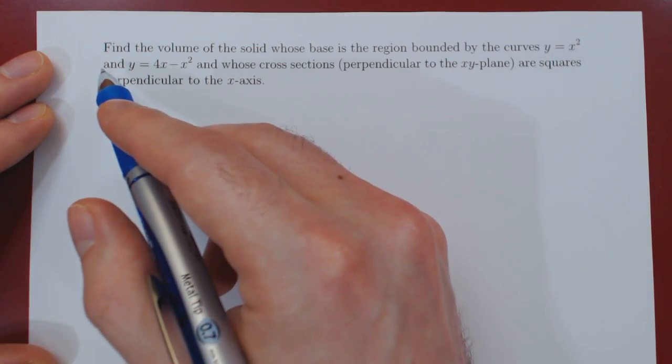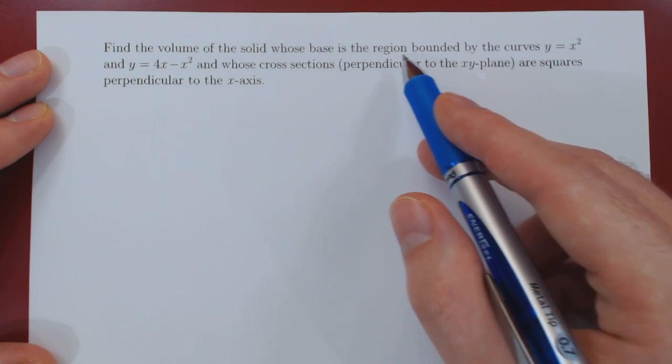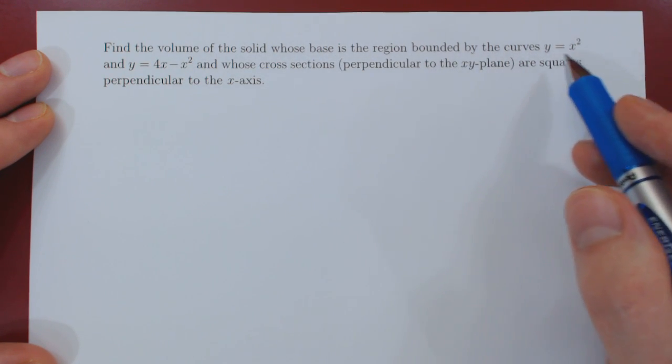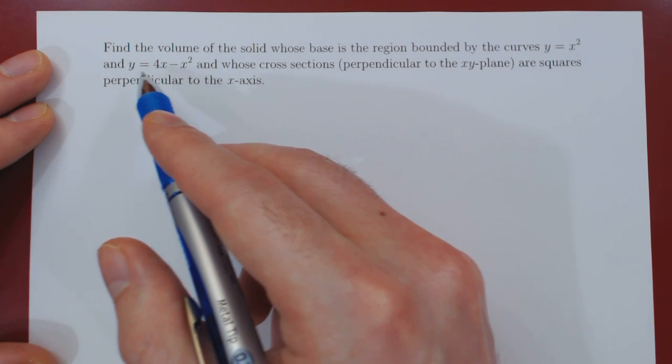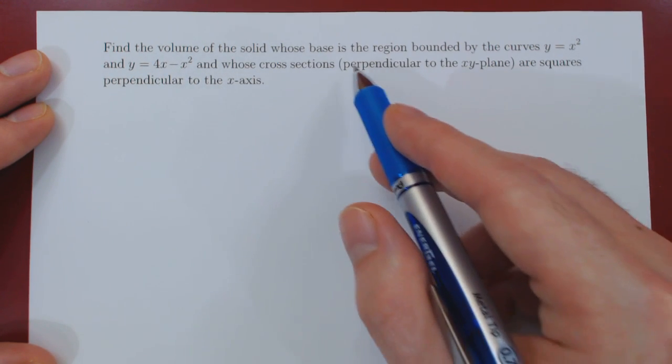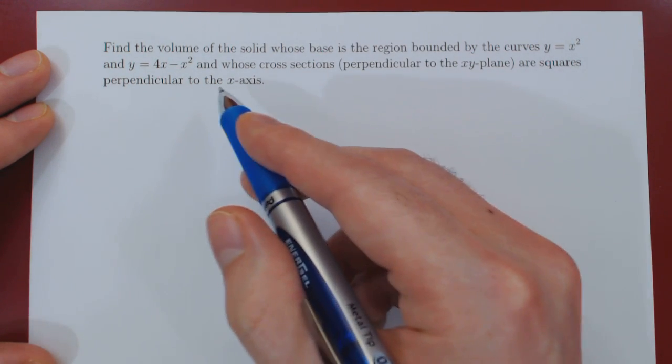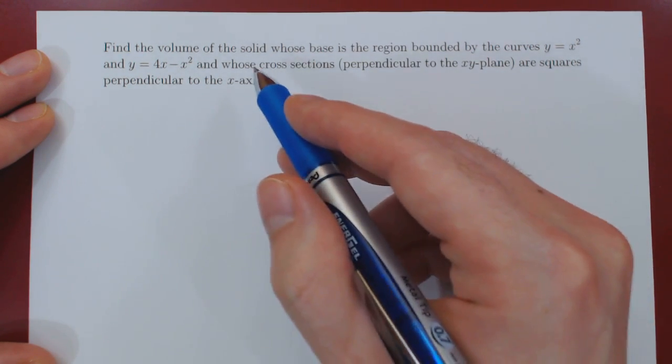Okay, so in this video, we want to find the volume of the solid whose base is the region bounded by the curves y equals x squared and y equals 4x minus x squared, and whose cross sections perpendicular to the xy plane are squares perpendicular to the x-axis.